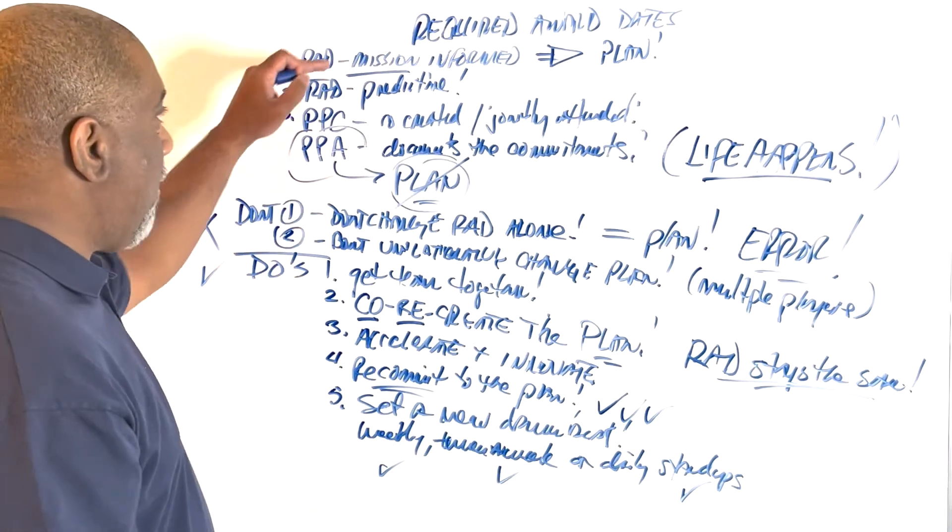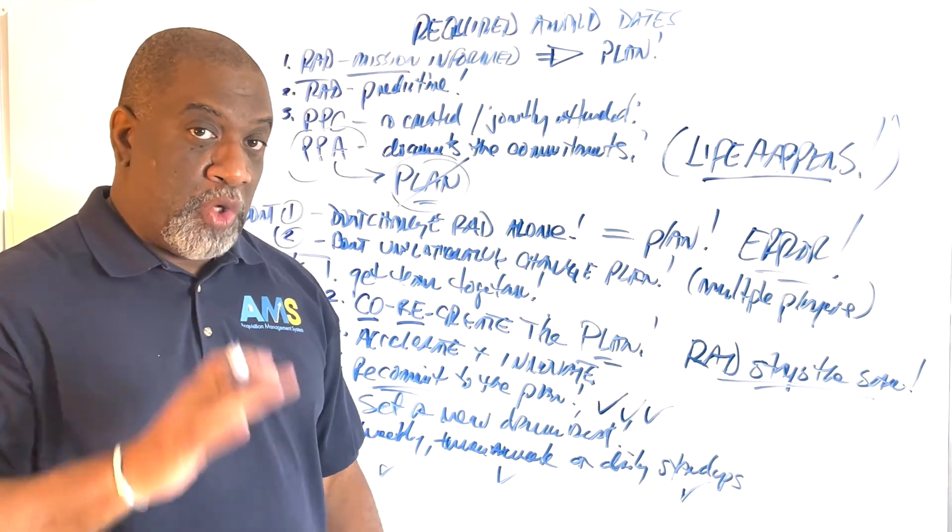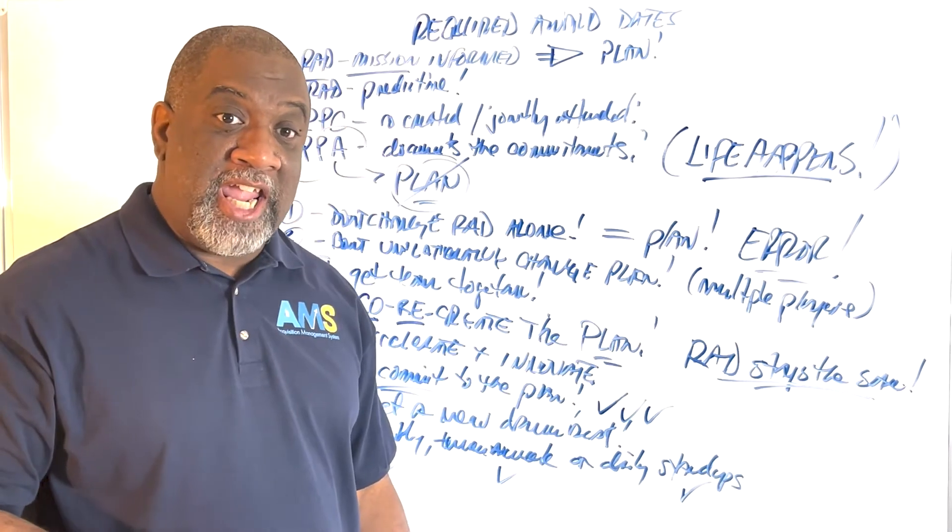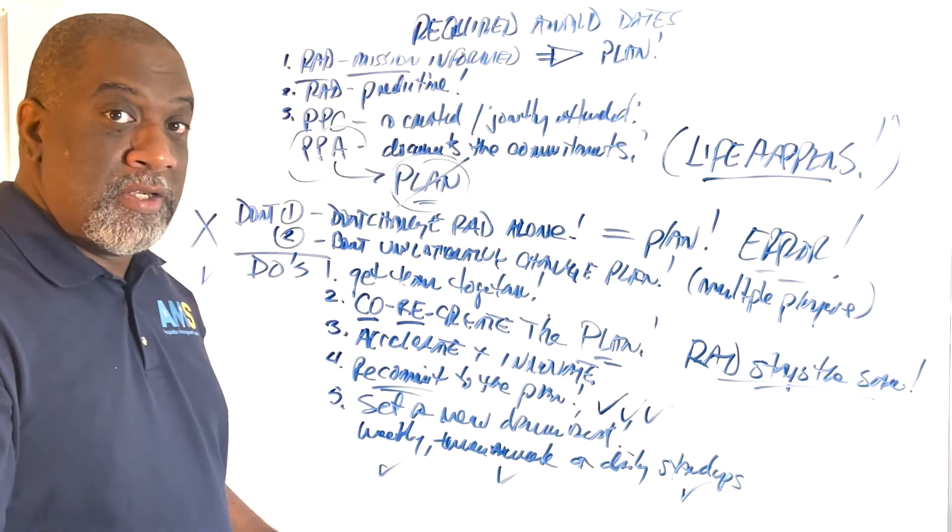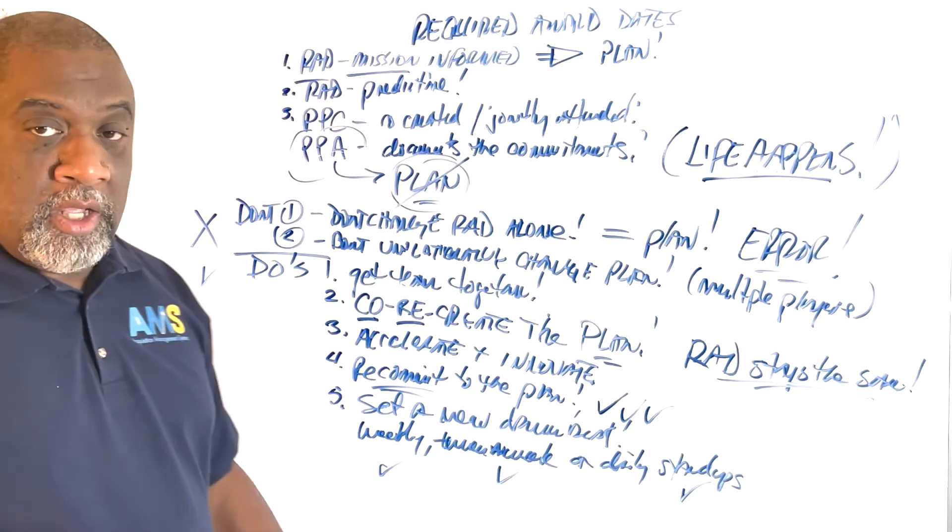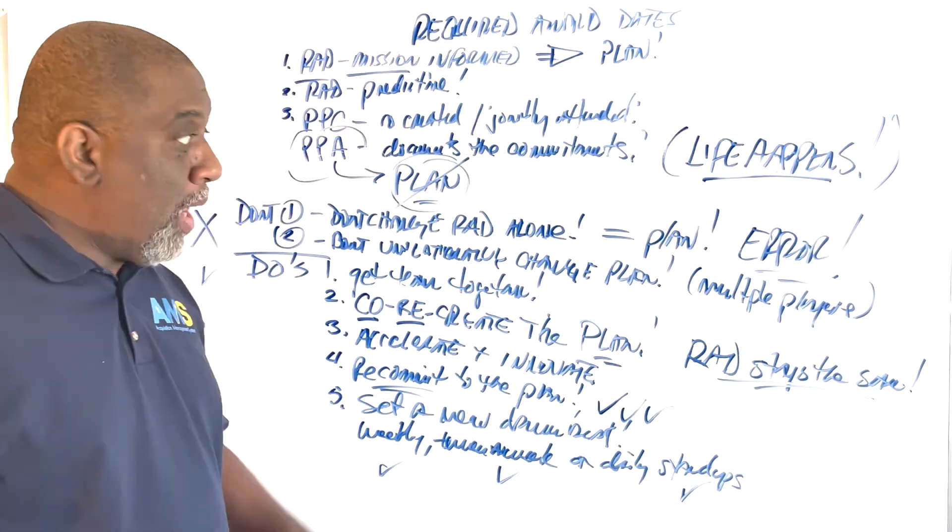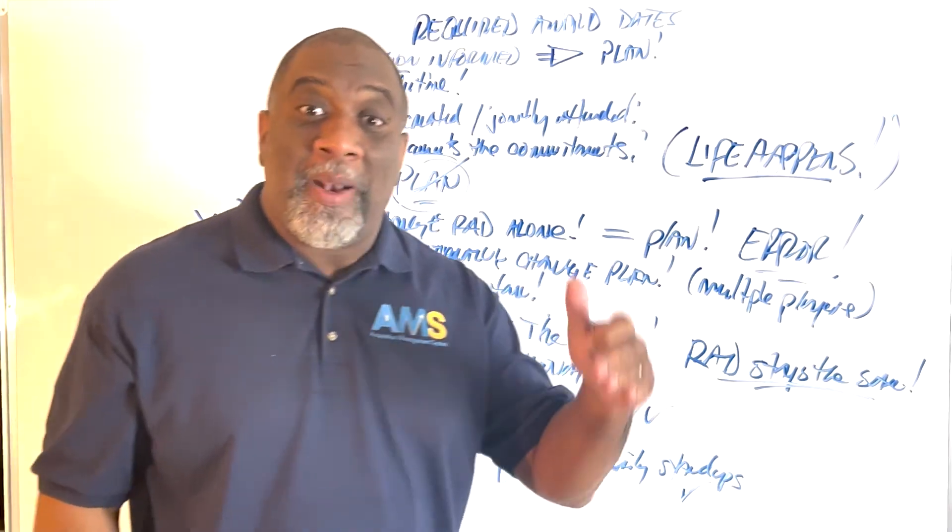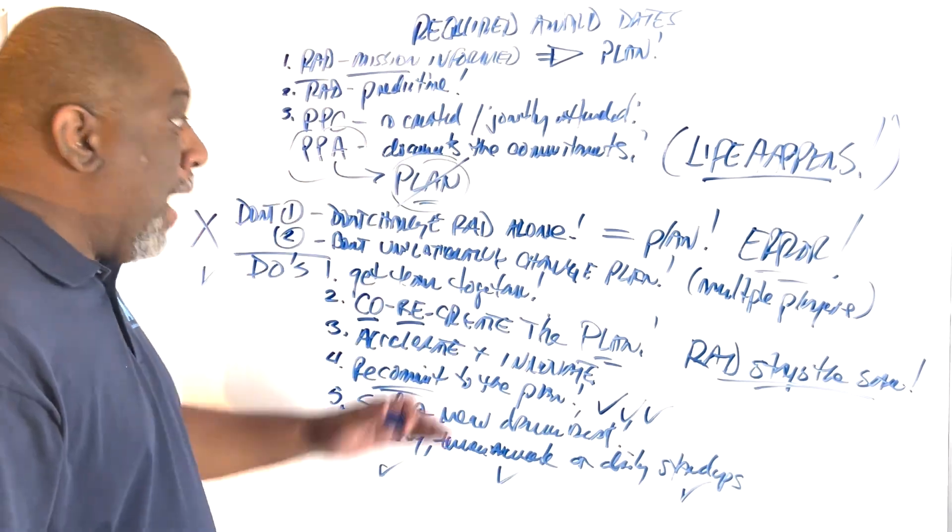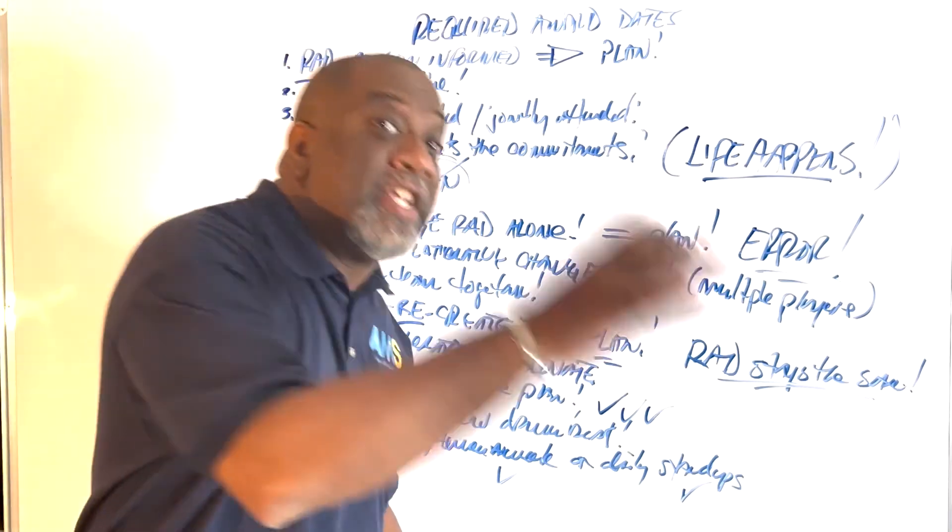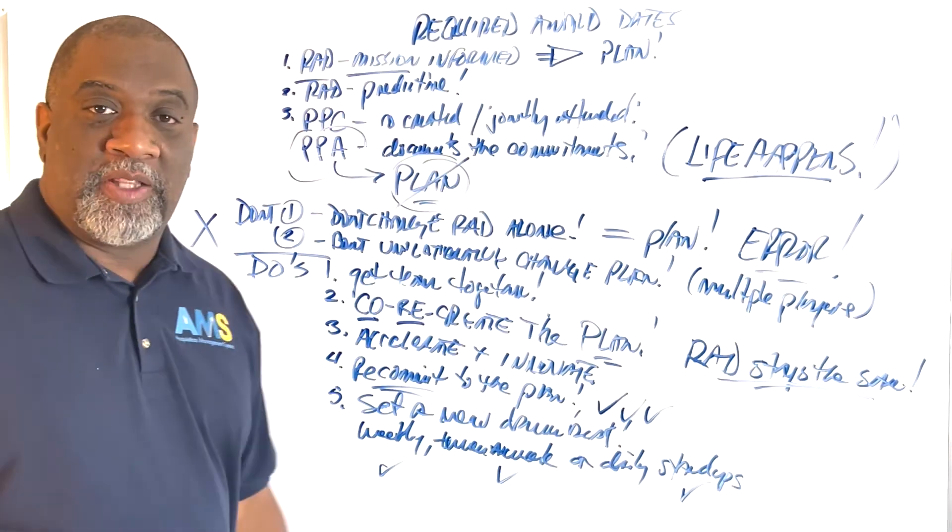Again, the required award date is mission-driven. So if the mission hasn't changed, and your plan is offline, it's not aligned, then there's only three things you can do. You have to reimagine the plan, the execution of the plan. You have to reimagine the resources applied to the plan. And then you got to speed up the plan.